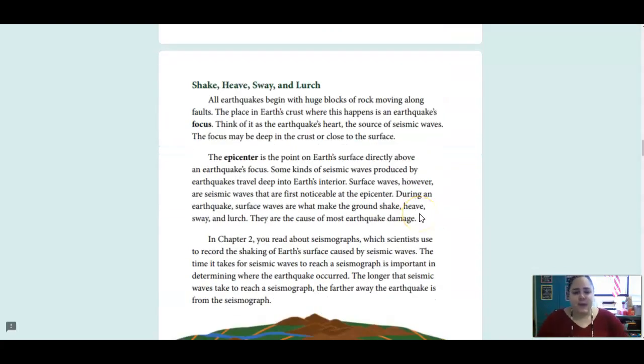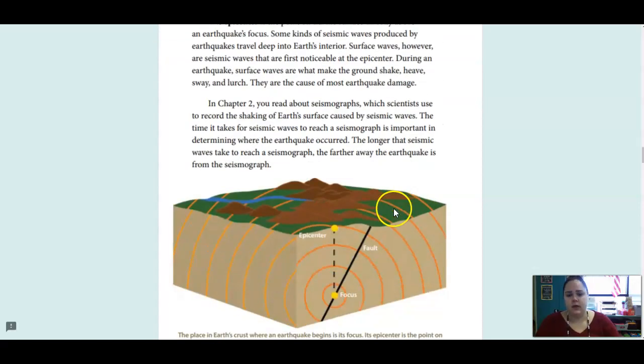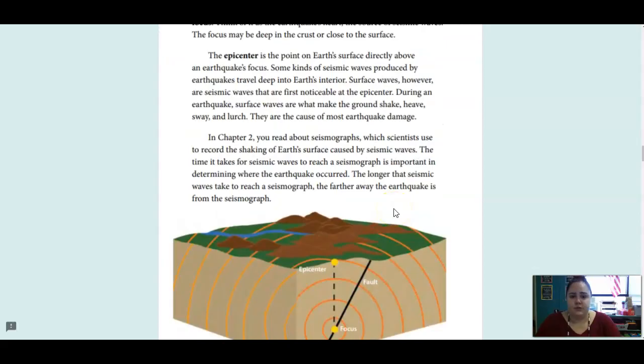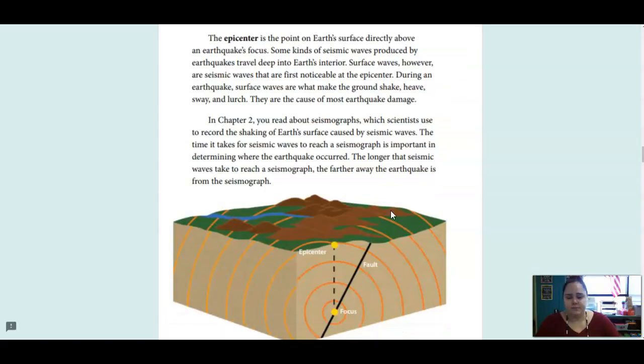Shake, heave, sway, and lurch. All earthquakes begin with huge blocks of rock moving along faults. The place in Earth's crust where this happens is an earthquake's focus. Think of it as the earthquake's heart, the source of the seismic waves. The focus may be deep in the crust or close to the surface. The epicenter is the point on Earth's surface directly above an earthquake's focus. Some kinds of seismic waves produced by earthquakes travel deep into the Earth's interior. Surface waves, however, are seismic waves that are first noticeable at the epicenter. During an earthquake, surface waves are what makes the ground shake, heave, sway, and lurch. They are the cause of most earthquake damage.